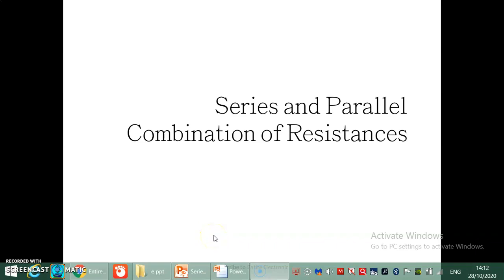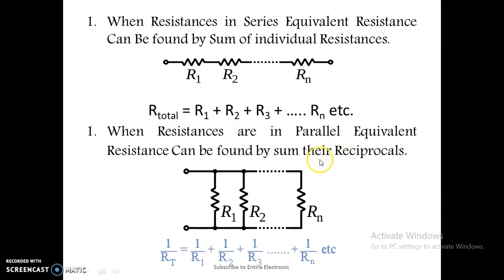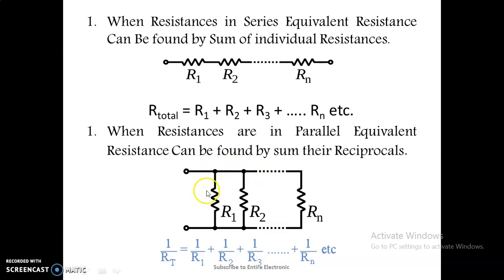Today we are going to learn how to find equivalent resistance of a circuit. When multiple resistors are in series or in parallel, we need to find the equivalent resistance of such combinations. When two resistances are in series, we find their equivalent by simply adding the individual resistances: R1 plus R2 up to Rn. Similarly, when resistances are in parallel, we take the sum of their reciprocals.